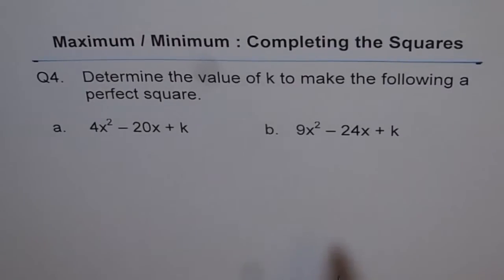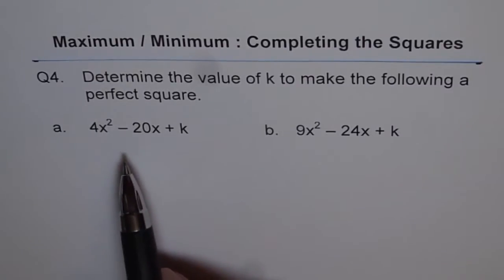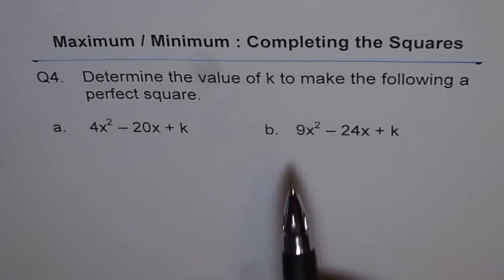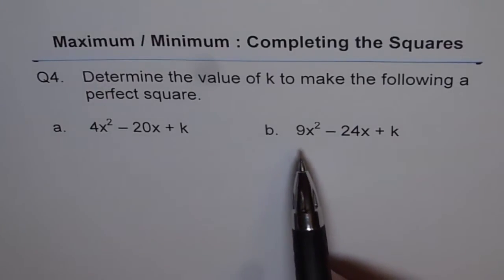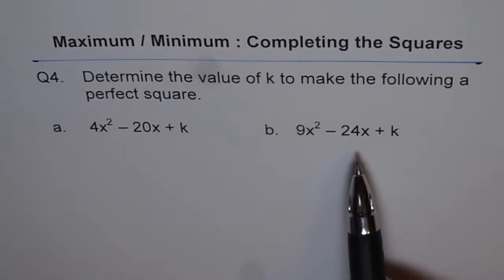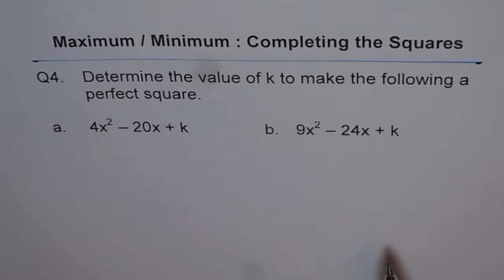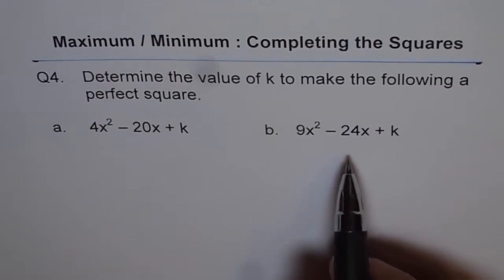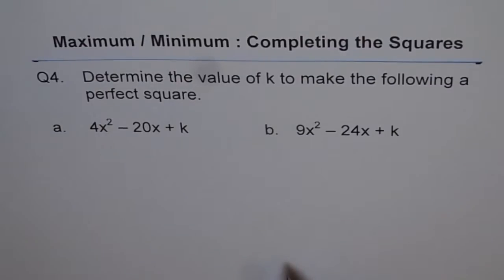So we have two examples here. A is 4x² - 20x + k and part B is 9x² - 24x + k. I will do one of them for you and leave the other for you to practice. Let me do part A. I will teach you the concept here and do part A. By now you must be an expert. You have already done three similar examples.